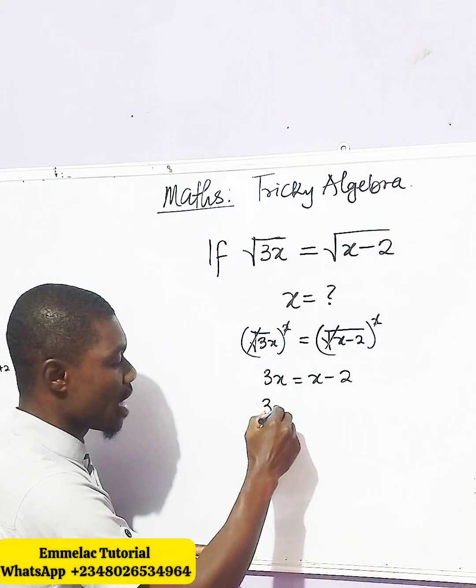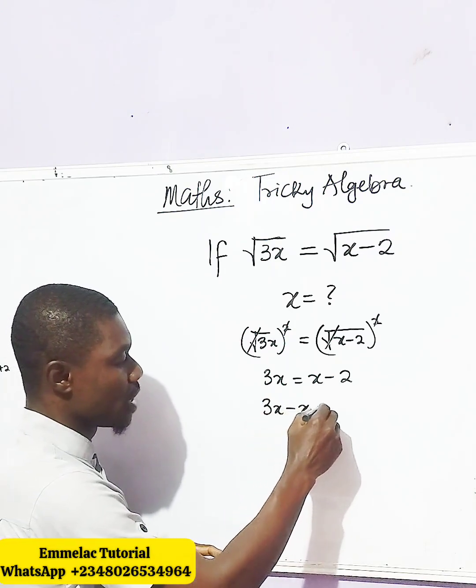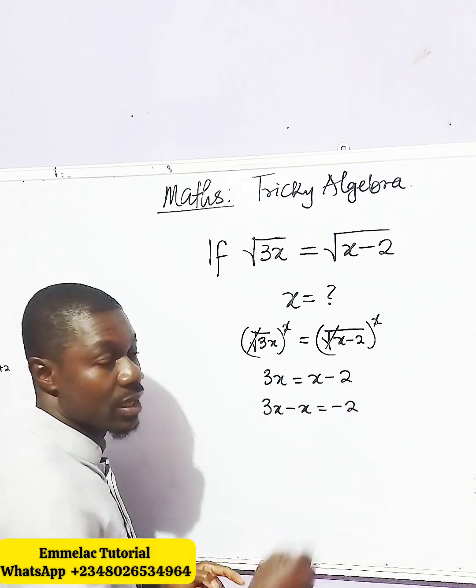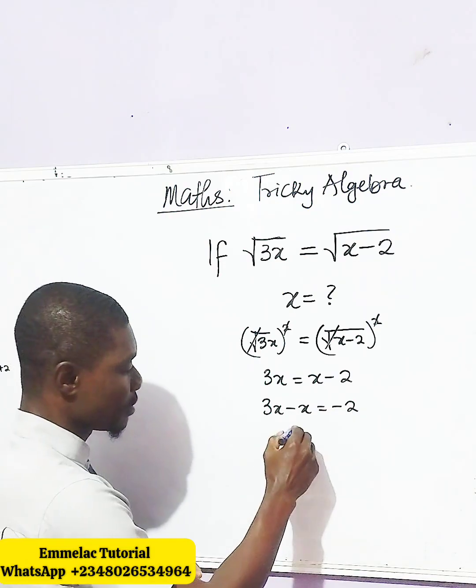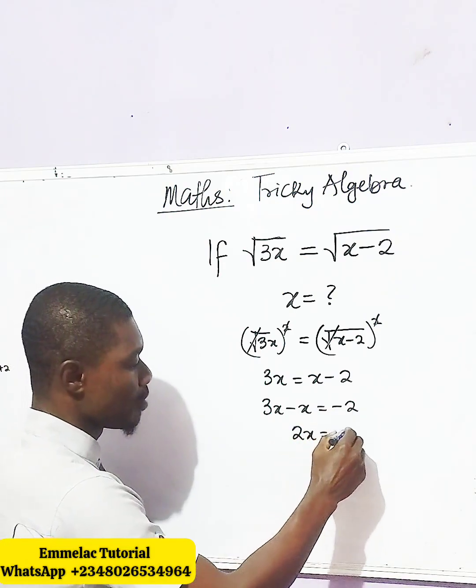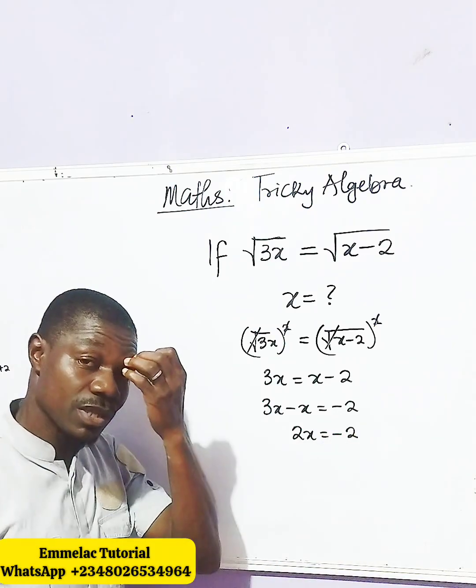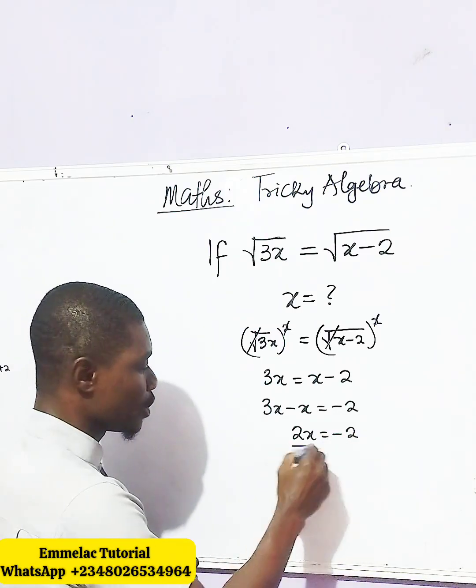So here you have 3x minus x equals minus 2. At this part here, 3x minus x, we have 2x equals minus 2. Now let's divide both sides by the coefficient of x, which is 2.